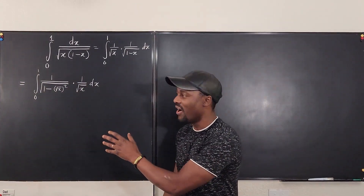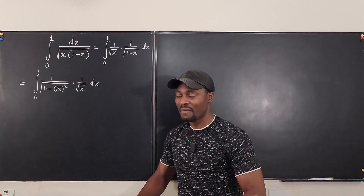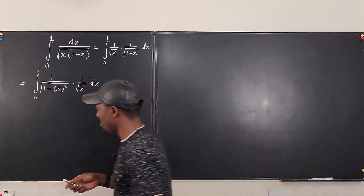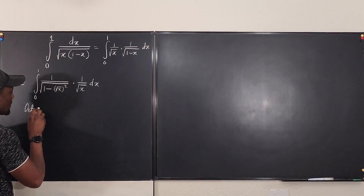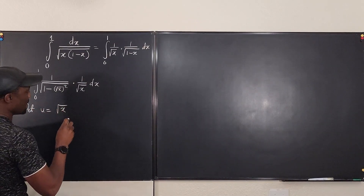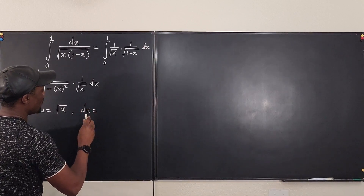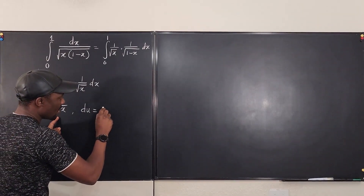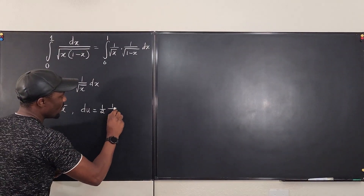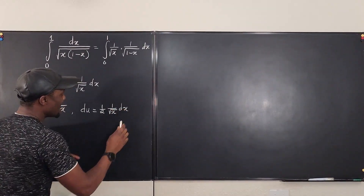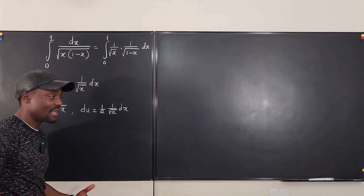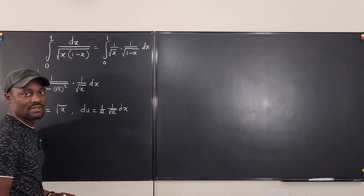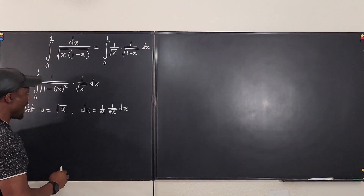I saw this coming — that's the first thing I noticed, and this is going to clean up all my work immediately. Now I'm going to do a u-substitution. Let u equal the square root of x, so du equals one-half times 1 over the square root of x, dx. This is a derivative that as a calculus student you have to have in your head: the derivative of the square root of x is always one-half times 1 over the square root of x.